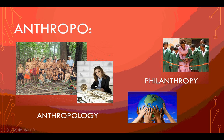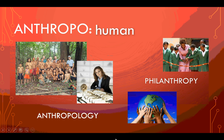So do you have it figured out? Do you know what anthropo means? Anthropo means human — the study of humans and the love and support of humans.